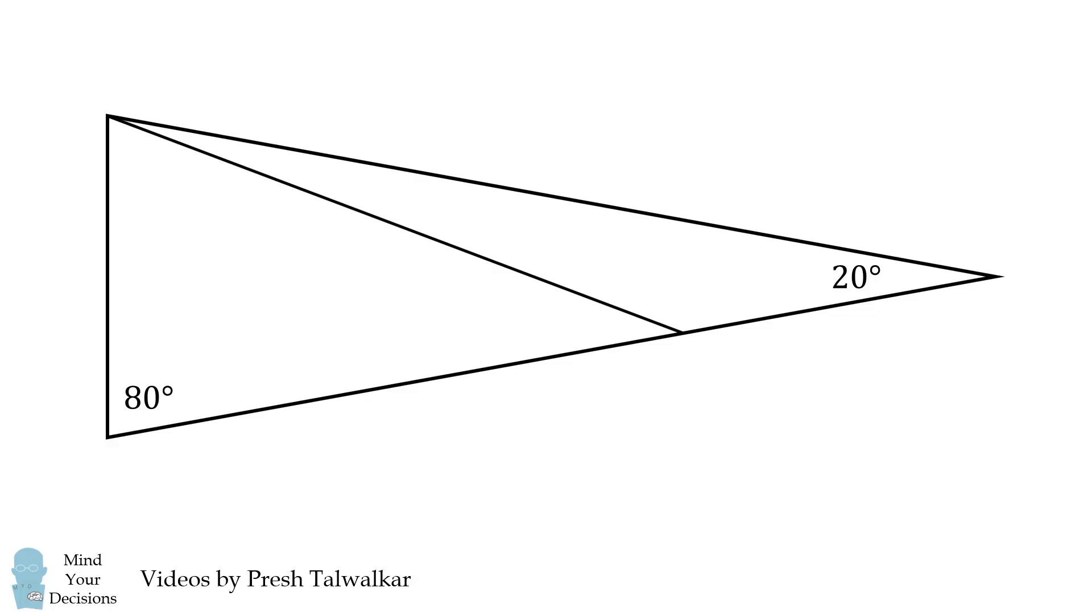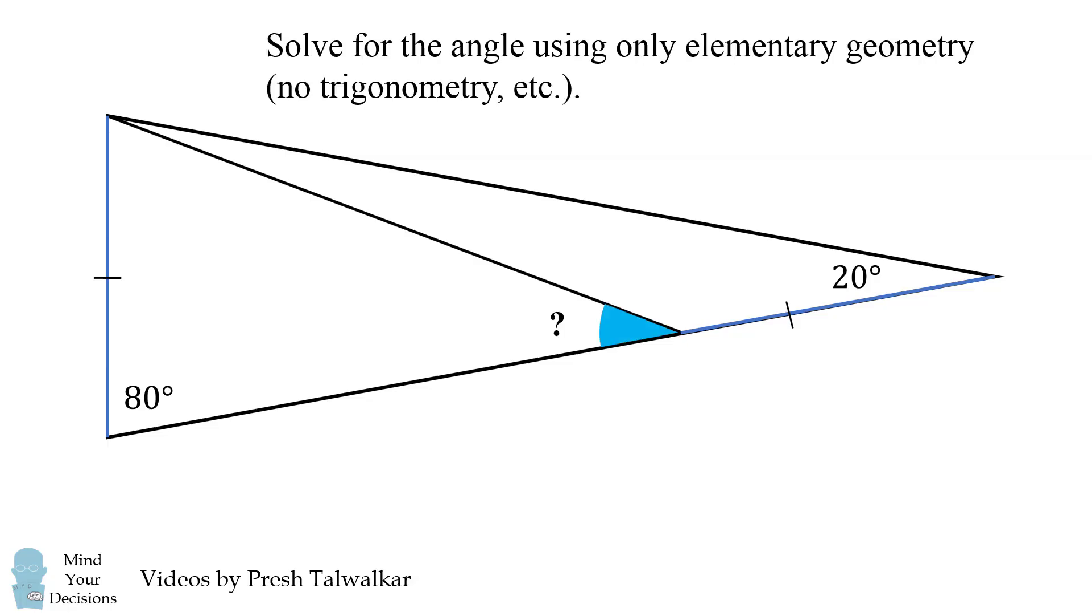Now draw a line segment such that this length right here is equal to this side length. The challenge is to solve for the measure of this angle using only elementary geometry. You're not allowed to use trigonometry or other methods.